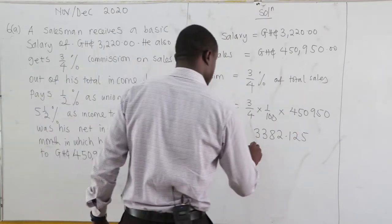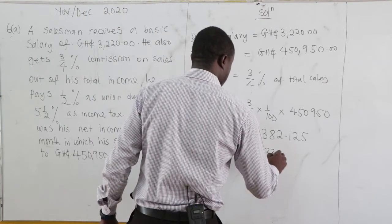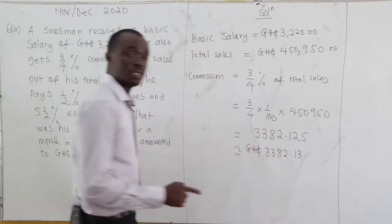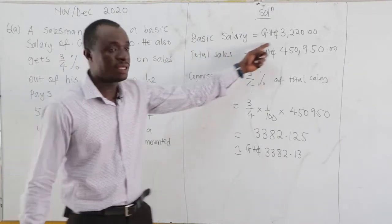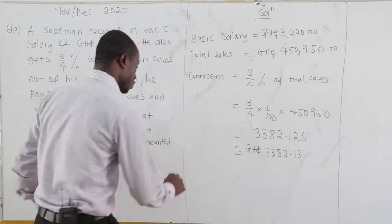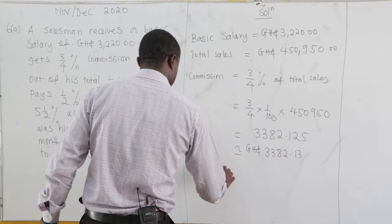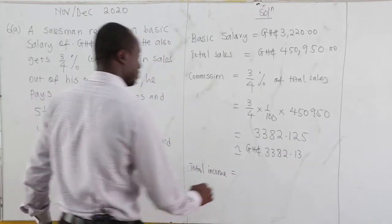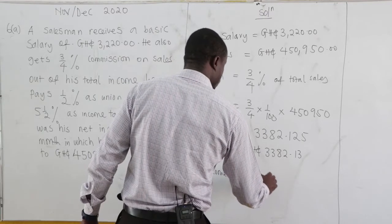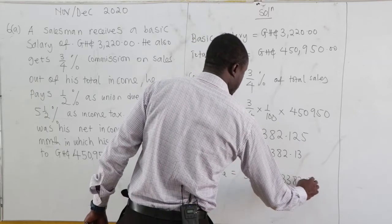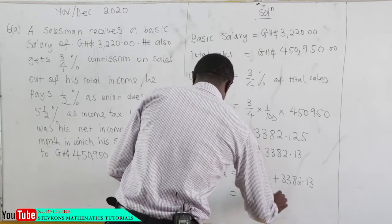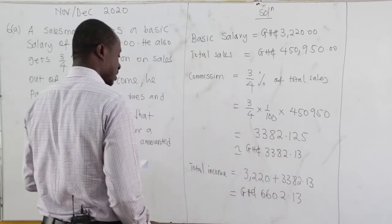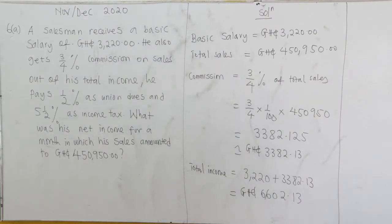Because it is currency, we round to 2 decimal places, so the commission is 3382.13. Now the basic salary is 3220 and the commission is 3382.13. Hence total income equals 3220 plus 3382.13, which gives us 6602.13. This is the total income.